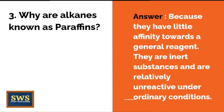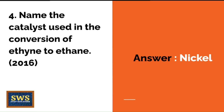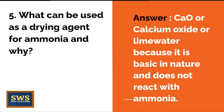Name the catalyst used in the conversion of ethene to ethane — from the 2016 paper. The correct answer is nickel. Note: ethane, ethene, ethane are similar names, so please don't get confused between them.